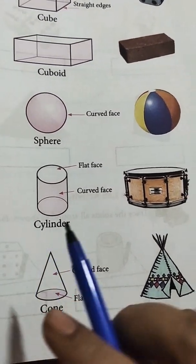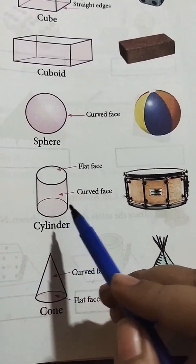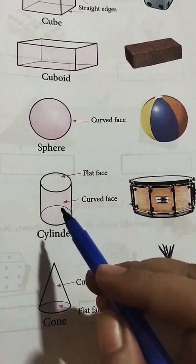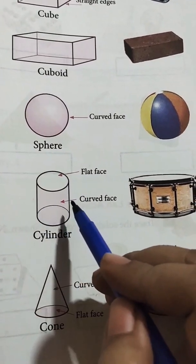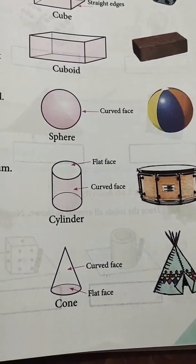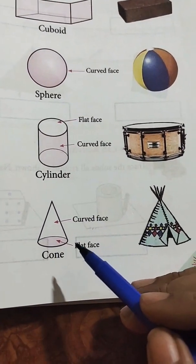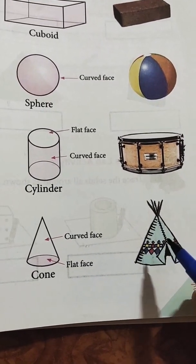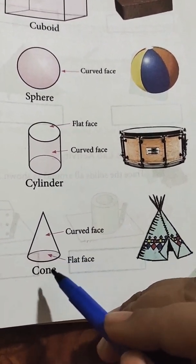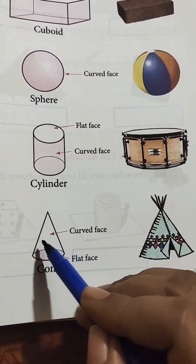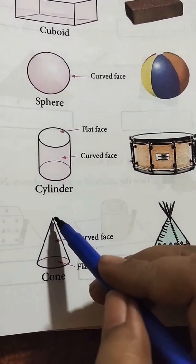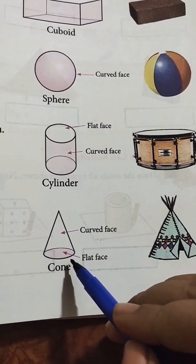Now come to the next. This solid shape looks like a drum. It is called a cylinder. It has a curved face and also flat faces. Now come to the next — this shape looks like a tent or your birthday cap. It has a curved face and also a flat face, and it has one corner. This is called cone.